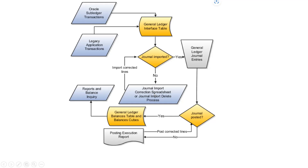If the data is wrong, as a consultant you need to review the correction spreadsheet — the task is called Import General Entries, or more precisely, Correct Import Data. Once you download the file it comes as an FBDI template. Review the records, correct them, and reprocess the transactions. If the data is good it will proceed to the General Ledger Posted stage, where another decision determines whether entries can be posted or not.